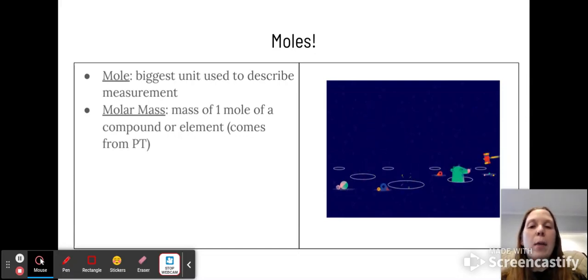And when we're looking at compounds, we use what's called a molar mass, which is the mass of one mole of a compound or an element. This comes from the periodic table. So the masses that you see on the periodic table, that carbon is 12.011, that is the molar mass of one carbon. So if you were to have two in a compound, you would multiply that mass by two. The unit for molar mass is grams per mole.